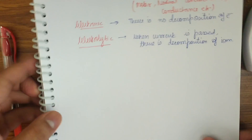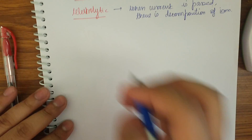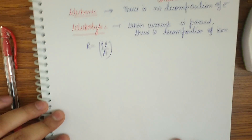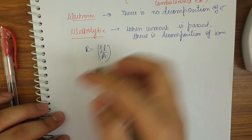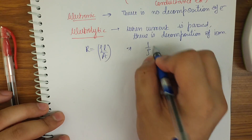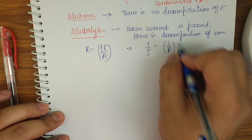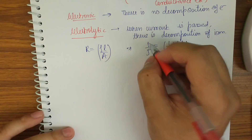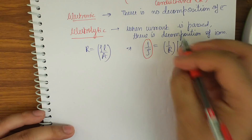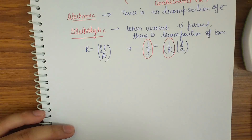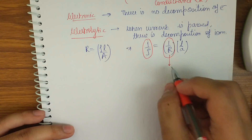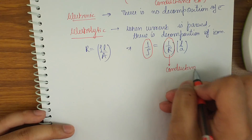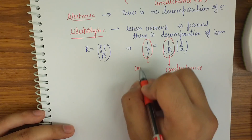We know from physics that R = ρl/A. Taking ρ to the other side, we get 1/ρ = (1/R) × (l/A). Now, 1/ρ is known as conductivity, and 1/R is known as conductance.